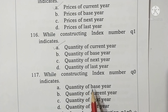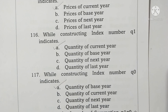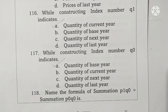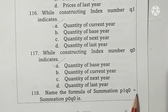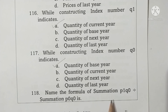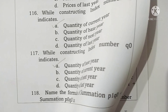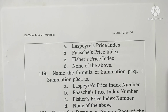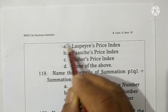Question 118: name the formula — summation P1Q0 divided by summation P0Q0. This is the formula of Laspeyre's price index number. Option A is correct.